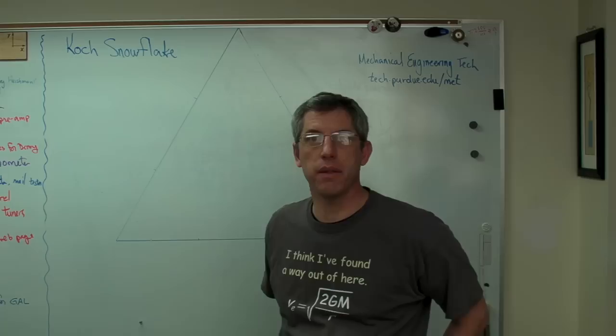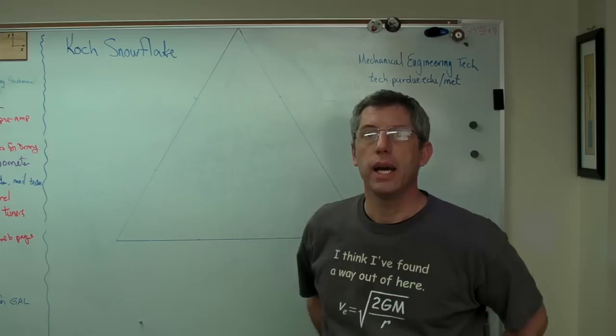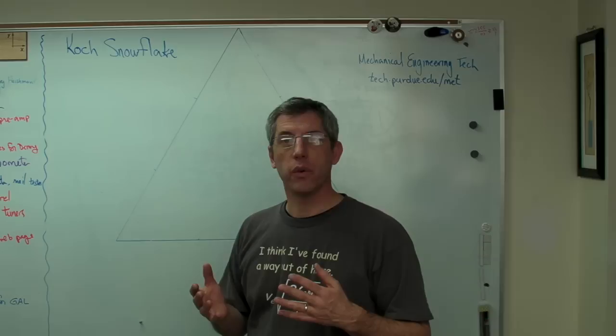Today I'd like to talk about one of my favorite things ever, and this is called a Koch snowflake. It was developed in 1904 by a Swedish mathematician named Niels Fabian Helge von Koch. It has a lot of really interesting properties, and it's really easy to develop. It's a great introduction into the idea of mathematics. It's really the study of patterns.